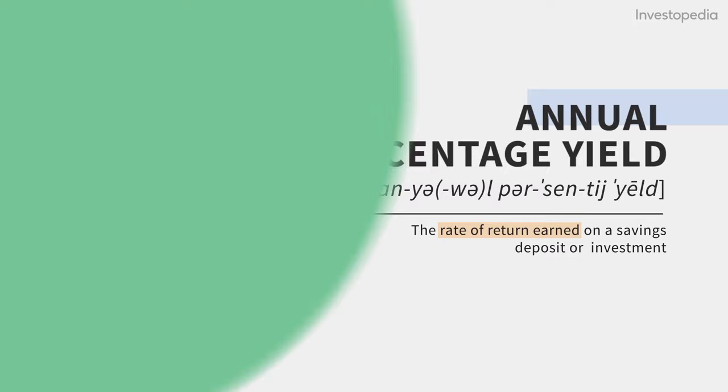Annual Percentage Rate, or APR, represents the annual rate charged for earning or borrowing money. Annual Percentage Yield, or APY, works the same way. But there's one key difference.